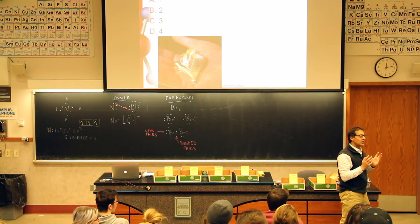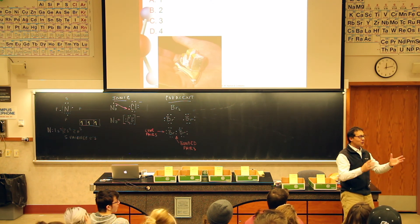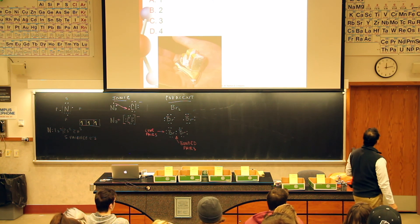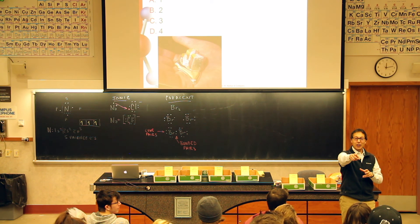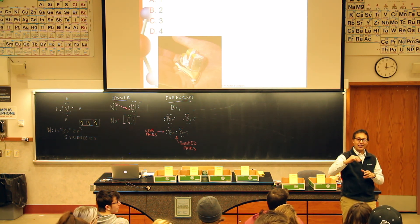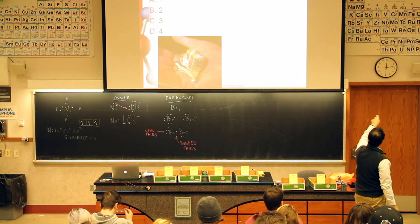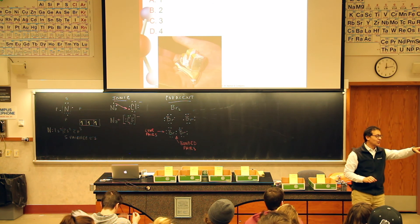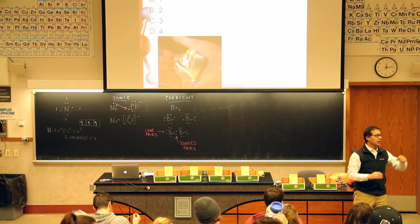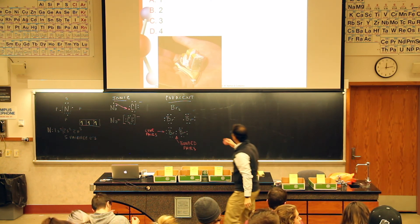Gallium has three valence electrons — three dots. Gallium is in energy level n=4, with two electrons in the S orbital and one in the P orbital, giving three total. And interestingly, gallium is blue on the periodic table because it's a liquid at room temperature.